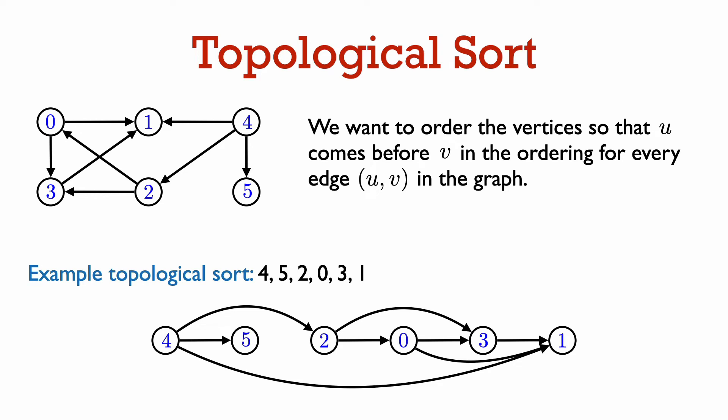Let's first recall the topological sort problem. We want to order all the vertices so that u comes before v in the ordering for every edge directed from u to v in the graph. If a graph has a directed cycle, then no topological sort is possible. But otherwise, a topological sort always exists. A topological sort is not necessarily unique — more than one order satisfying the requirements can be possible.